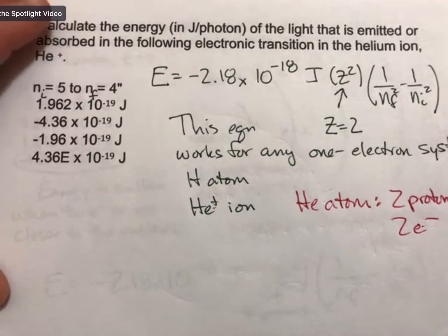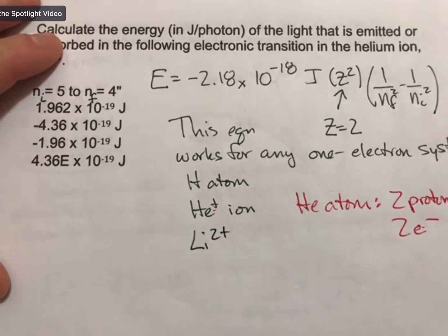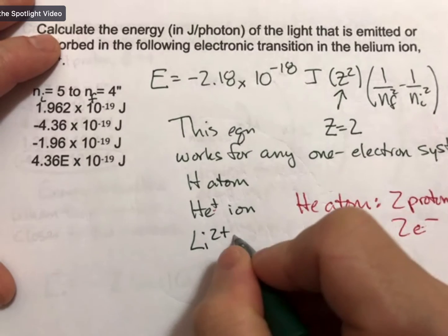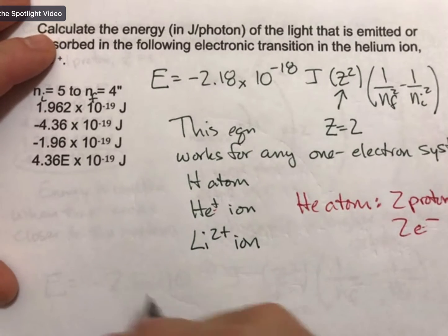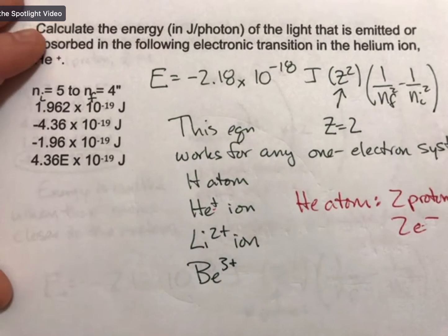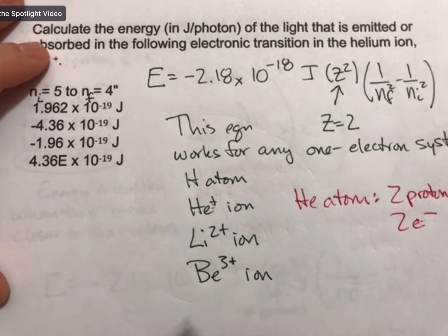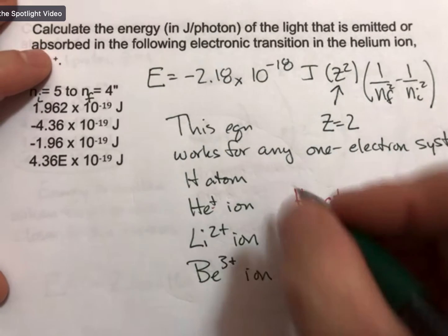And other examples you can see, including on the homework, would be the lithium two plus ion. And I think that's the last one, but you may see the beryllium three plus ion.